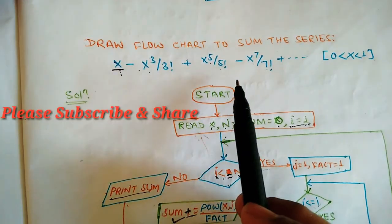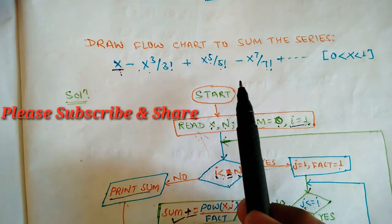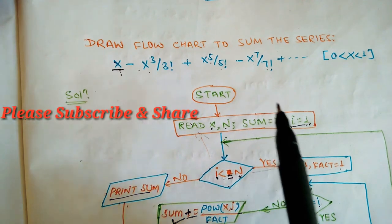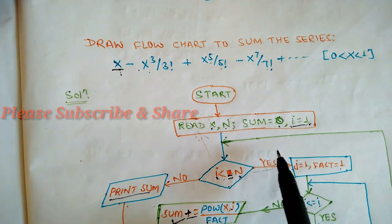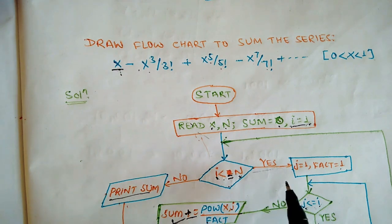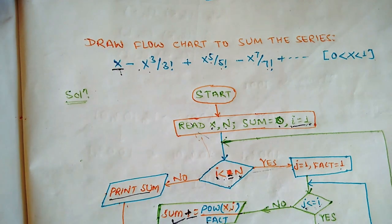You can verify this when n = 5 or n = 7. Finally it will end. This is all about the flowchart for this series. I hope you understand — if you have any doubt, please comment in the comment box and ask. Thank you so much.